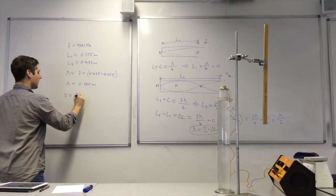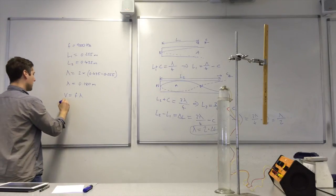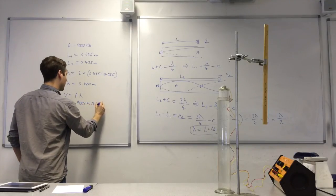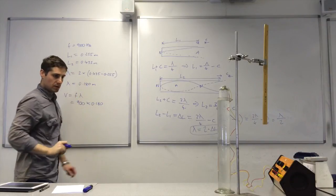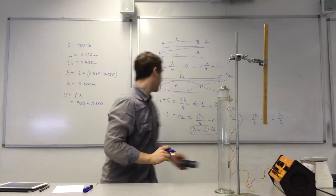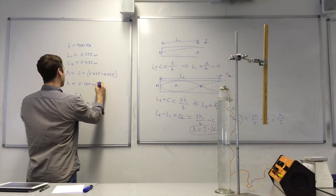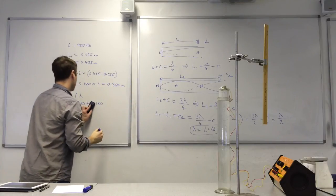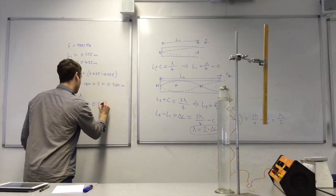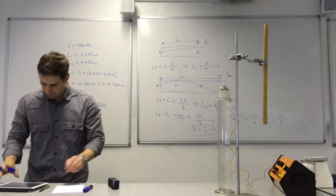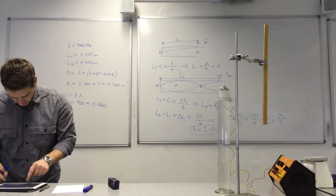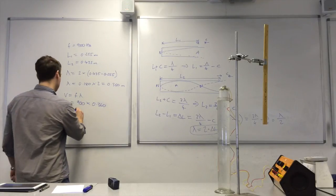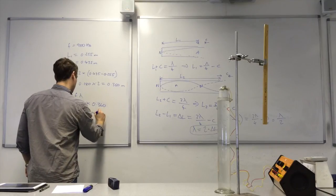So now I use this equation V equals F lambda, which is then 900 times by 0.180. Oh, I didn't multiply that by 2. This should be times 2, which is 0.360. Multiply those out. 324 meters per second.